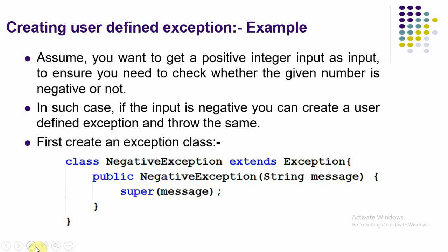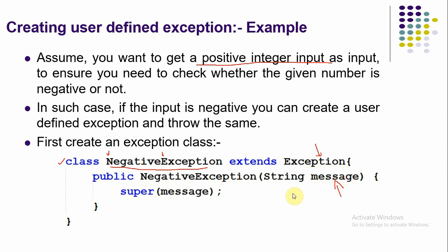Here is an example to understand how to create a user-defined exception. Assume you are creating a program where you want one positive integer as input, but sometimes a user can enter a negative input. If the input is negative, we want to throw an exception called NegativeException. To create such an exception, first create a class named NegativeException — capitalize the first letter of every word, that is the recommended naming convention. Then extend the predefined class Exception. Inside, write a constructor that accepts the error message and calls super, passing that error message to initialize the exception object.